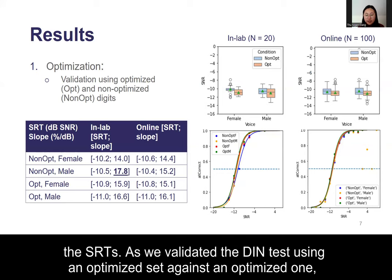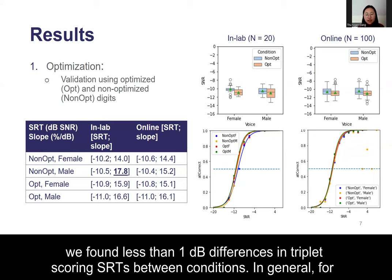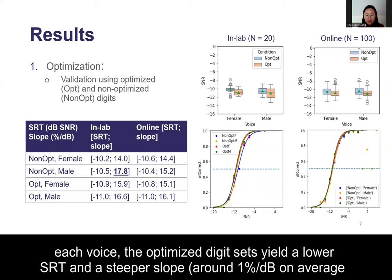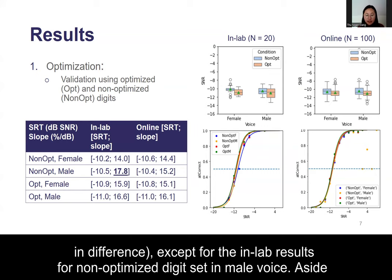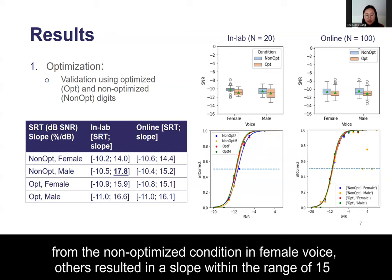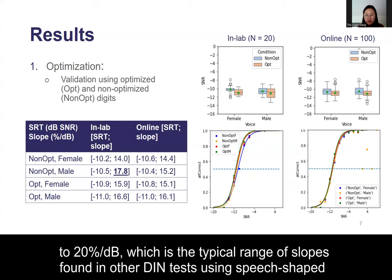As we validated the DIN test using an optimized digit set against a non-optimized one, we found less than 1 dB differences in triplet scoring SRTs between conditions. In general, for each voice, the optimized digit sets yield a lower SRT and a steeper slope, around 1% per dB on average in differences, except for the in-lab results for non-optimized digit sets in male voice. Aside from non-optimized conditions in female voice, others resulted in a slope within the range of 15 to 20% per dB, which is the typical range found in other DIN tests using speech-shaped noise.